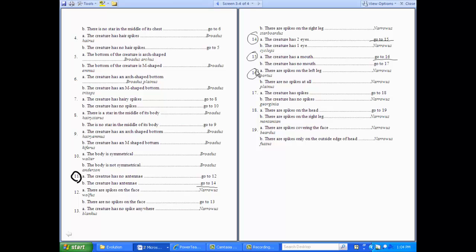There are spikes on the left leg, or there are no spikes at all? Spikes. Spikes on the left leg. The first organism is Nerois portus, is the scientific name for that creature. Okay. No. These aren't real creatures.